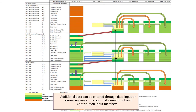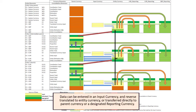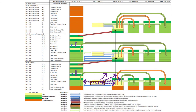Additional data can be entered through data input or journal entries at the optional parent input and contribution input members. Data can be entered in an input currency and reverse-translated to entity currency, parent currency, or a designated reporting currency. All entity currency data can also be translated into one or all of the designated reporting currencies.